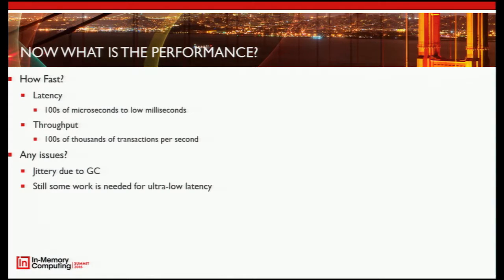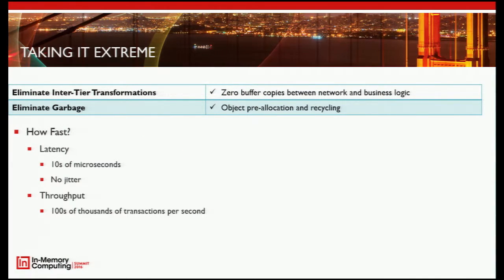To get to the next level — ultra-low latency of a few micros — you have to do two things. First, eliminate all inter-tier transformations: from messaging layer to business logic layer to data layer, there cannot be any buffer copies or anything to transport data across these tiers. Second, eliminate garbage. When you do this, you get down to tens of micros, zero jitter, completely flat performance profiles, and hundreds of thousands to millions of transactions per second.